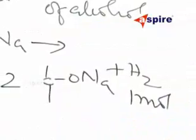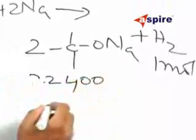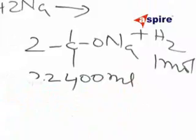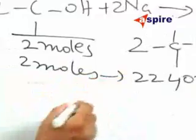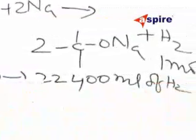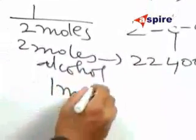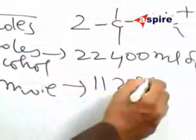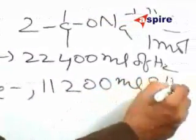Now, 1 mole of hydrogen at STP corresponds to 22,400 ml and 2 moles is responsible for this. So 2 moles of alcohol gives so much of hydrogen. Therefore, 1 mole of alcohol is going to give this by 2, that is 11,200 ml of hydrogen.